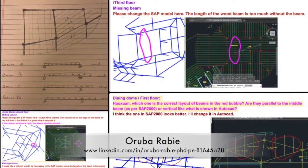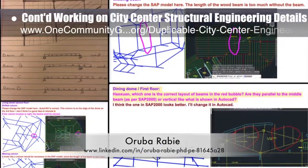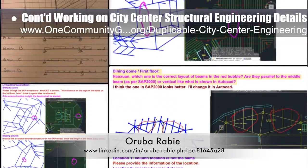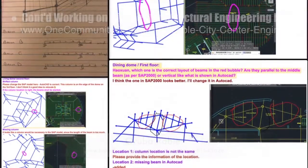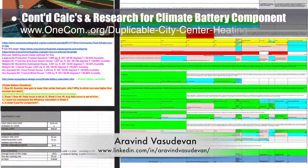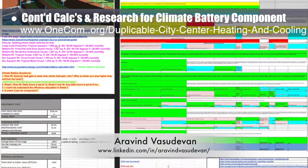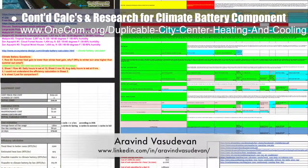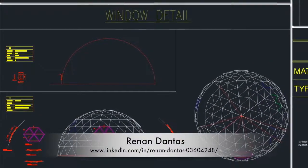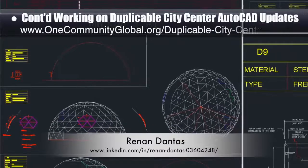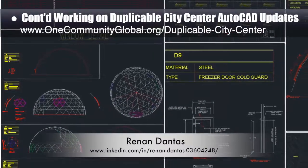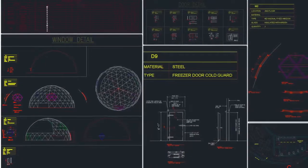Oruba Rabi, PhD, PE, and civil engineer, continued working on the city center structural engineering AutoCAD and SAP 2000 model corrections. This week she finished corrections for the living and social domes in SAP 2000 and provided the needed AutoCAD corrections. Erevin Vasudevan, mechanical engineer, continued calculations and research for the climate battery component of the city center heating and cooling open source hub, with a focus on final corrections and updates to the sizing spreadsheets for sizing climate batteries for the food structures. Hannan Dantes, mechanical engineer, continued his 20th week on duplicable city center AutoCAD updates, reorganizing and simplifying the window and door plan while updating the main floor plan with new standardized window and door selections.